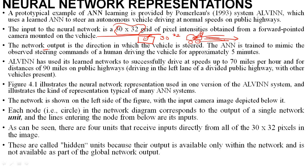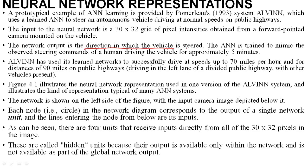We will see how that system is connected and how it works. The network output is a direction — it is the direction in which the vehicle is steering. If a vehicle is coming on the left side, the steering will be turned to the right. If vehicles are coming on the right side, the steering will be to the left. The output of the ALVINN network is a steering direction.